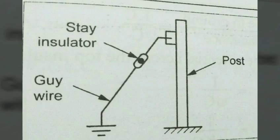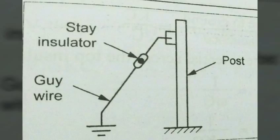Next, stay insulators or egg insulators. The stay wire or guy wire is used to support the dead end poles and keep the poles in position. The insulator used in the guy wire is called a stay insulator. The shape of this insulator is egg-shaped, so it is also called an egg insulator. It is also used to avoid leakage current flowing through the lower part of the guy wire.